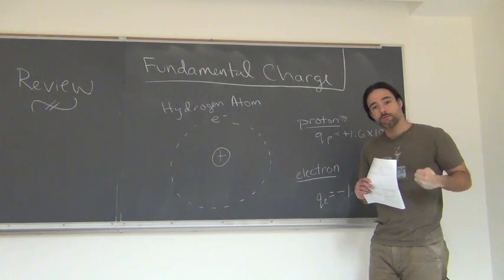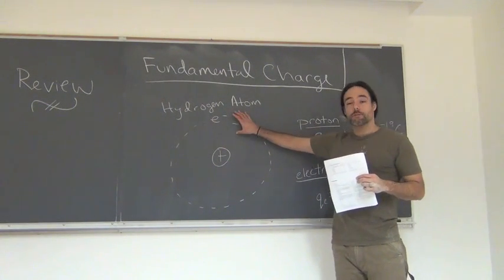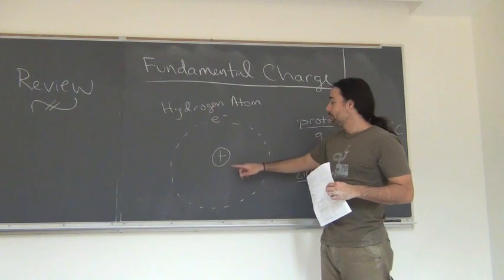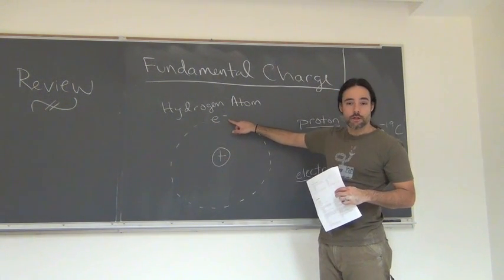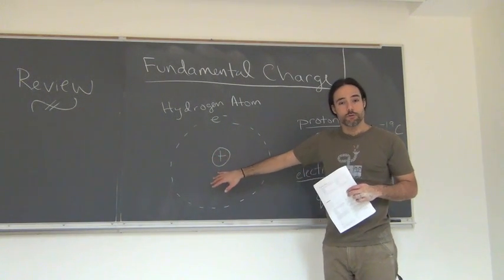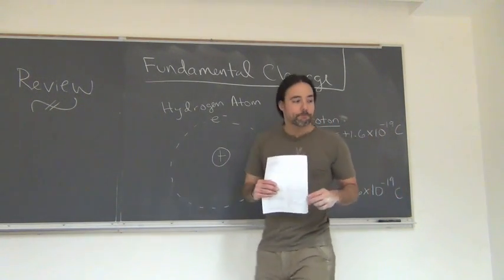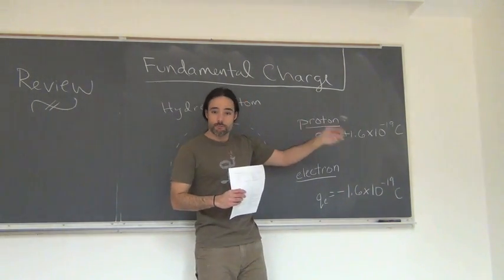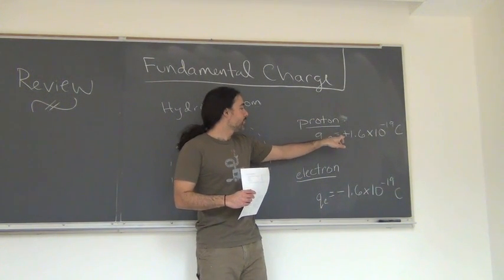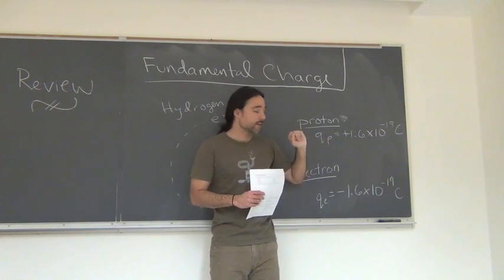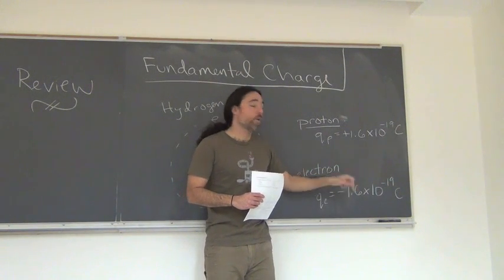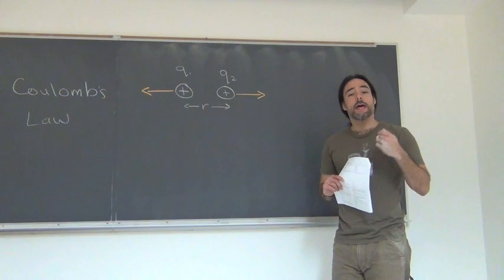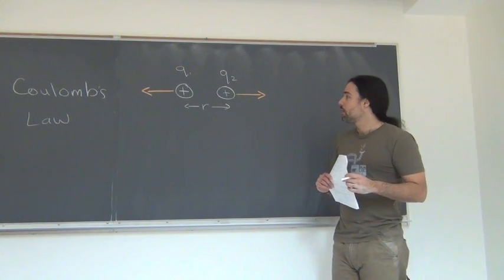In addition to knowing there are two types of charge, we also know that all matter is made of two fundamental charges. If we look at a hydrogen atom, there is a proton at the nucleus and an electron traveling around the nucleus. There may also be neutrons, which are neutrally charged. The proton is positive and the electron is negative — the electron gets a charge of negative 1.6 times 10 to the minus 19 coulombs.